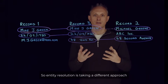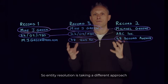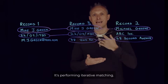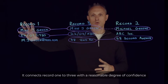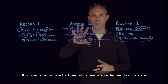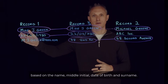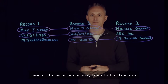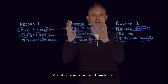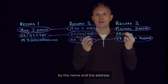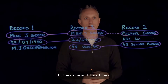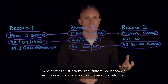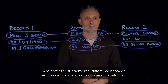Entity Resolution takes a different approach to Record to Record Matching — it performs iterative matching. It connects Record 1 to 3 with a reasonable degree of confidence based on the name, middle initial, date of birth, and surname. And it connects Record 3 to 2 by the name and the address. That's the fundamental difference between Entity Resolution and Record to Record Matching.